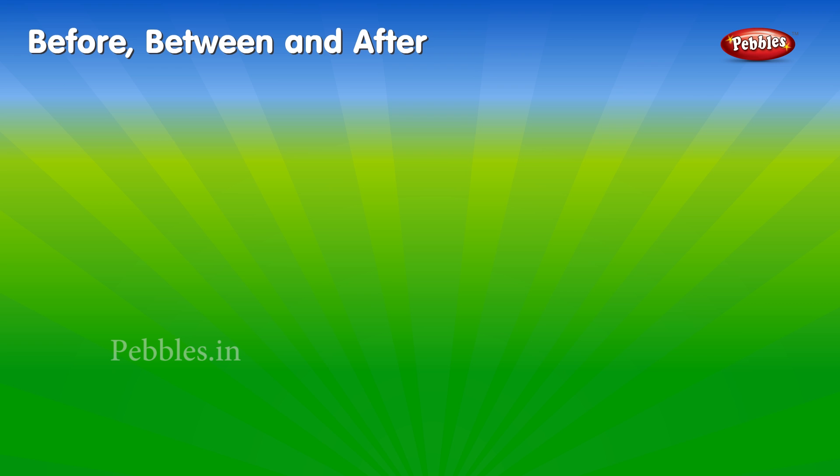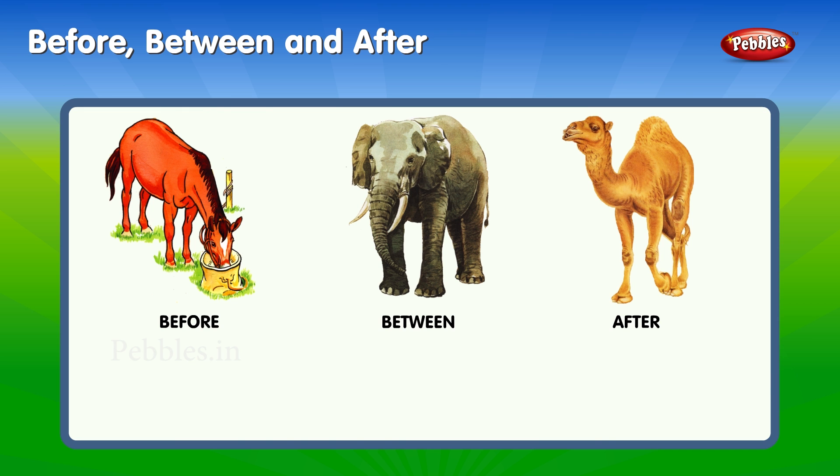Before, between, and after. The horse is before the elephant. The elephant is between the horse and the camel. The camel is after the elephant.